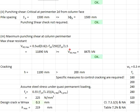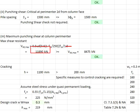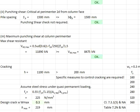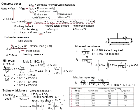Comparing to the load acting on the column, the punching shear resistance is greater than the applied load. Therefore the punching shear resistance is adequate. Next, determine the maximum bar spacing.